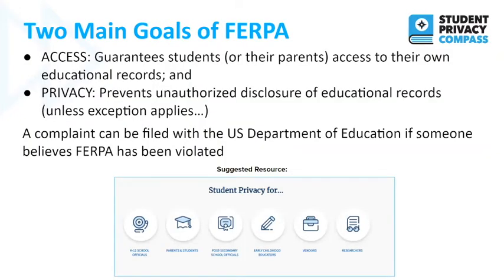There are two big main goals of FERPA. FERPA passed in the 1970s — when many US privacy laws first passed — in an atmosphere of concern about data use, mistrust of government in the wake of Watergate, and concern about equity. There were articles around the country about how students were being denied access to their records but not being allowed to graduate because of something allegedly in those records. Congress acted and passed FERPA in 1974.